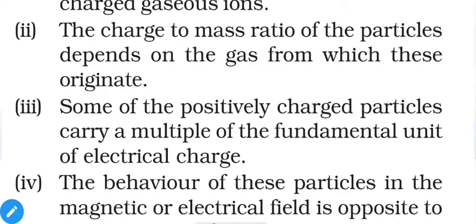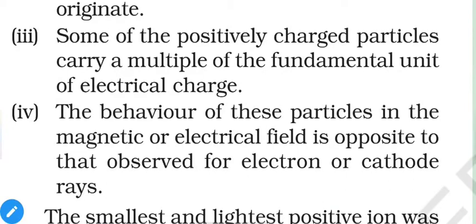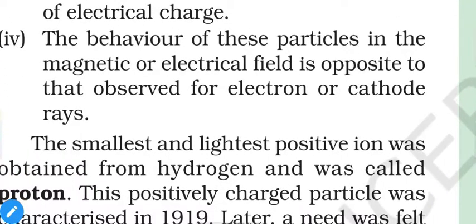The charge-to-mass ratio of the particles depends on the gas from which they originated. In the previous case with electrons, they are independent. Some of the positively charged particles carry multiples of the fundamental unit of electrical charge — for example, hydrogen has one proton left, while helium when an electron is removed still has two neutrons and two protons. The behavior of these particles in a magnetic or electric field is opposite to that observed for electrons or cathode rays.